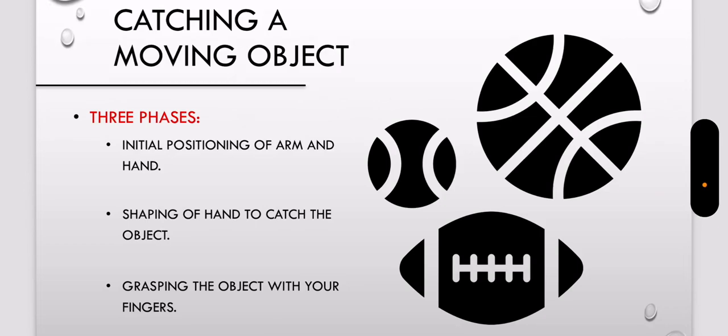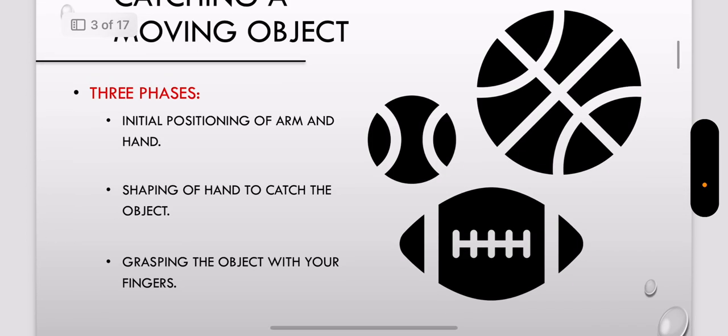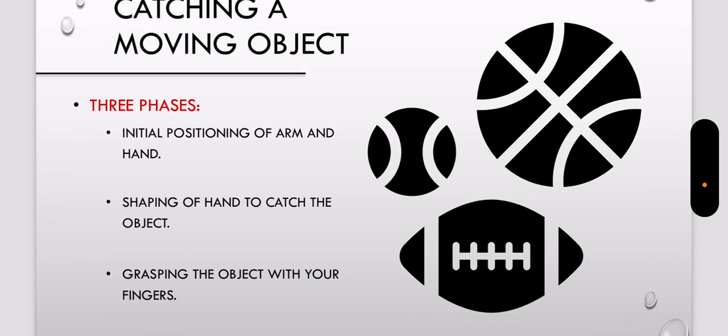All right, so I'm going to be talking about the three phases to catching a moving object. The first one: initial positioning of arm and hand. Then the shaping of your hand to catch an object, and then grabbing that object with your fingers.